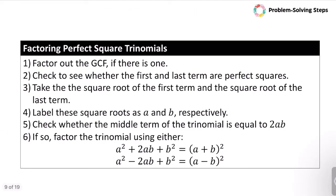When factoring perfect square trinomials, always factor out a GCF first if there is one. Then check whether the first and last terms are perfect squares. If they are, take the square root of the first term and the square root of the last term, label these a and b, and check whether the middle term equals 2ab. Then factor using either (a + b)² or (a − b)².